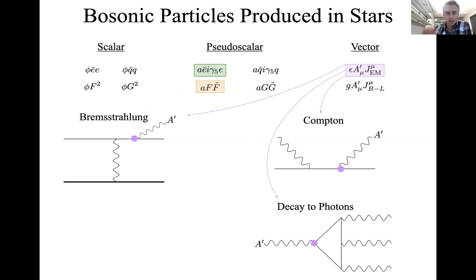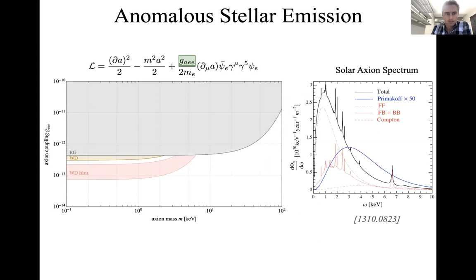In the second half of the talk I'll discuss the dark photon case worked out with Robert. The same processes occur, with two differences: decay is much slower, and medium dependence greatly enhances production in the sun relative to other stars. For axions coupled to electrons, the coupling g_ae is roughly constrained to 4×10⁻¹³ from absence of red giant cooling and about 3×10⁻¹³ from white dwarf cooling.